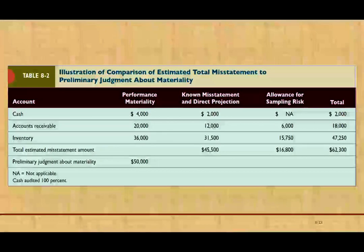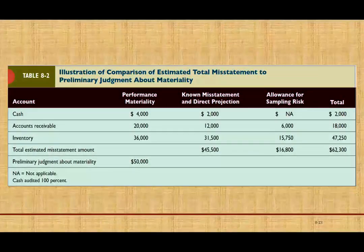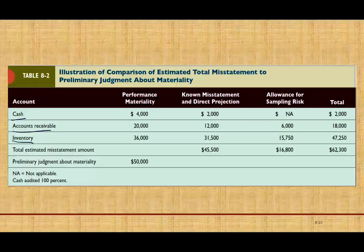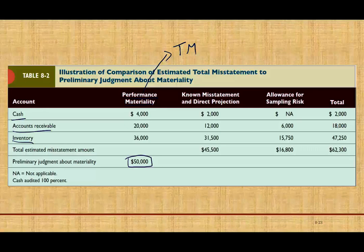Let's take a look at this example to see how the process works. We have three accounts: cash, accounts receivable, and inventory. The performance materiality — also called tolerable misstatement — is $4,000 for cash, $20,000 for receivable, and $30,000 for inventory. The preliminary judgment about materiality for the whole company is $50,000.